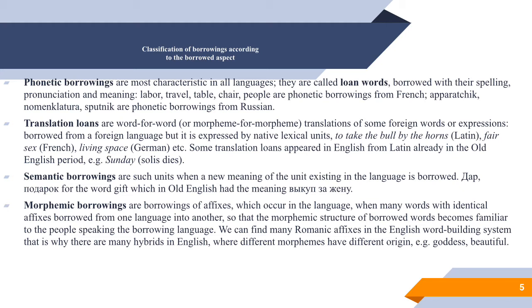Morphemic borrowings are words with affixes which occur in the language when many words with identical affixes are borrowed from one language into another, so that the morphemic structure of the borrowed words becomes familiar to speakers of the borrowing language. We can find many Romantic affixes in the English word-building system, which is why there are many hybrids in English where different morphemes have different origins — for example, 'goddess' and 'beautiful'.